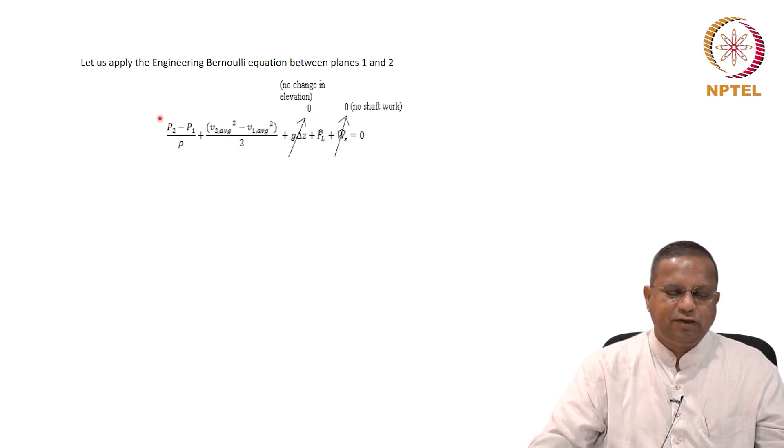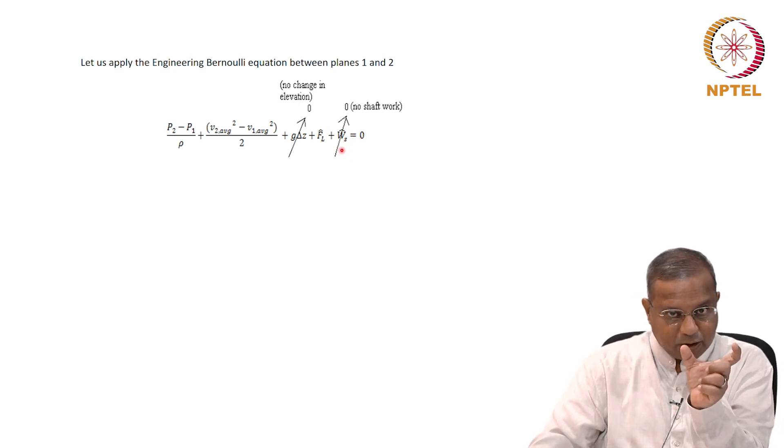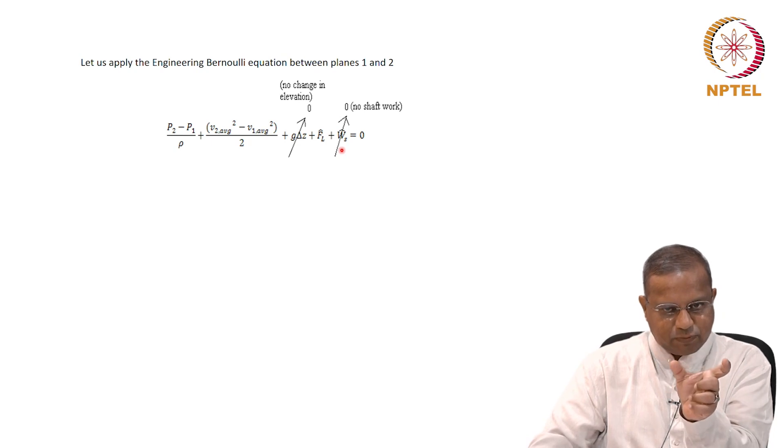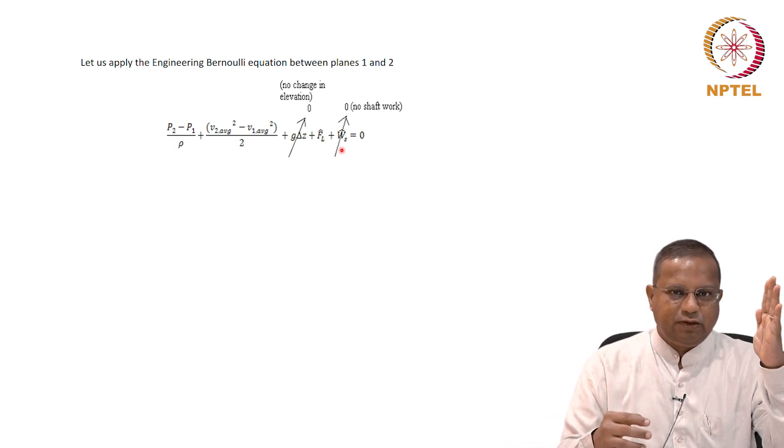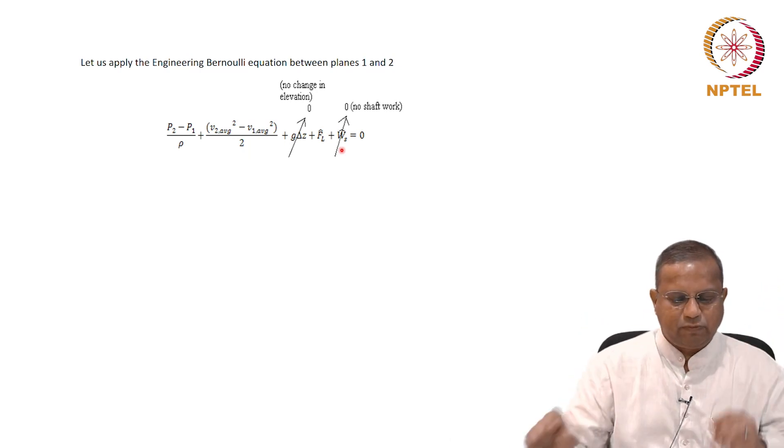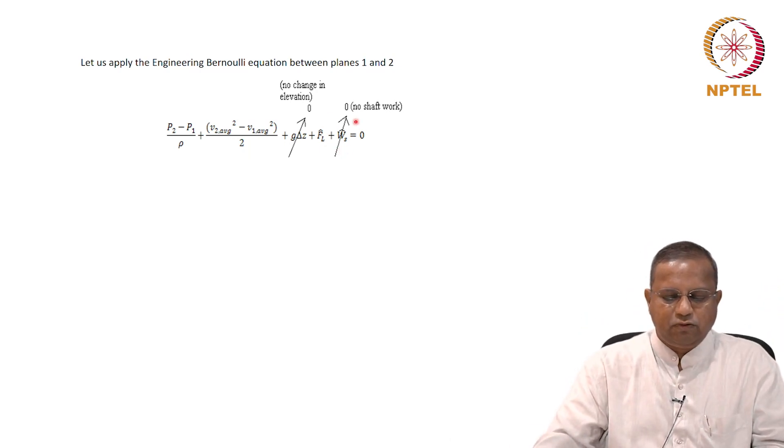Same way as you apply your material balance equation, you can apply your engineering Bernoulli equation. P2 minus P1 by rho plus v2 average squared minus v1 average squared by 2 plus g delta z plus f l hat plus v s hat equals 0. In this case, there is no pumping as a part of the system, which is whatever we drew there, only the piece from the pre stenosis plane to the post stenosis plane with the stenosis somewhere in the middle. So there is no motor, no pump.